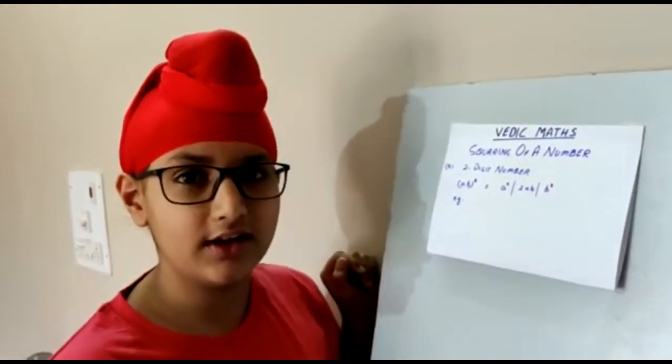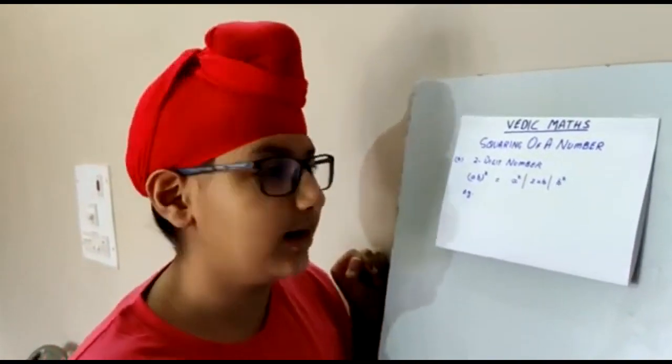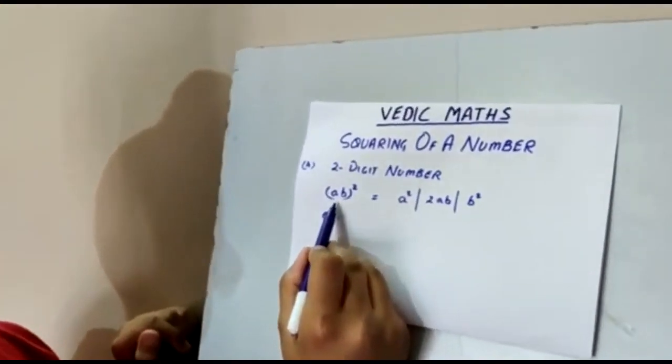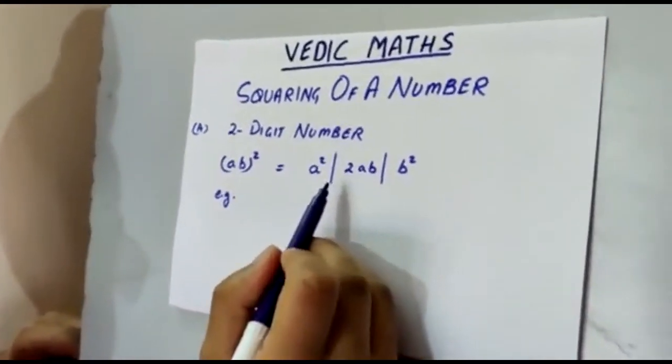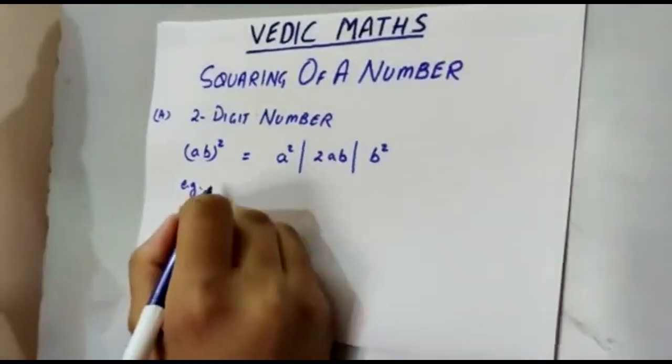So let me share some techniques of Vedic Maths. Let us start with finding a square of a two-digit number. Let's assume AB as a number. These are three easy steps to find the square of AB. Now let's take some examples.